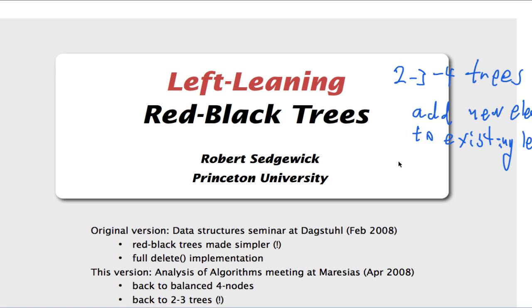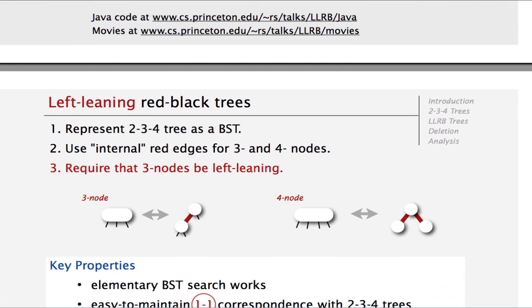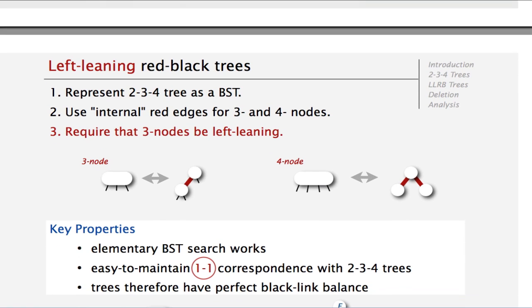And the other is that we break up 4-nodes on the way down. So one can implement 2-3-4 trees directly, but there are all kinds of detailed complications like how much space to allocate to each node because the node might start as a 2-node, might grow to a 3-node, 4-node, and so on.